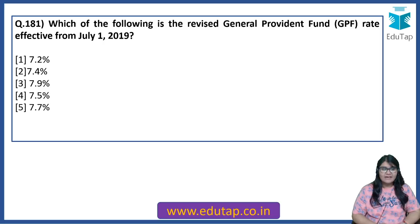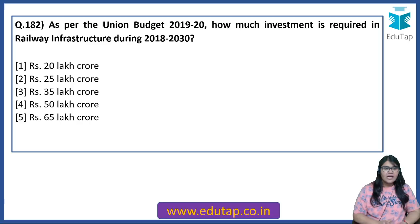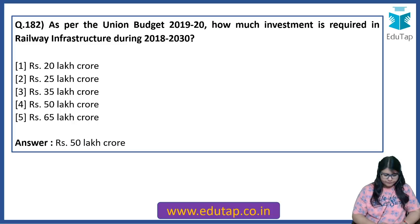What is the Revised General Provident Fund (GPF) rate effective from July 1, 2019? The answer is 7.9% — this is the revised GPF rate effective from July 1, 2019. As per the Union Budget 2019-20, how much investment is required in railway infrastructure during 2018-2030? The answer is 50 lakh crore.